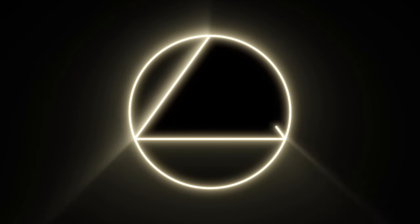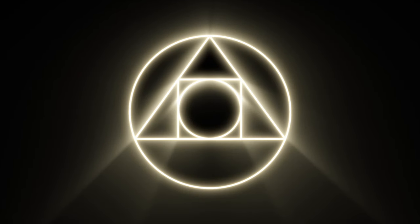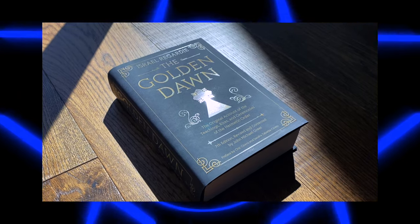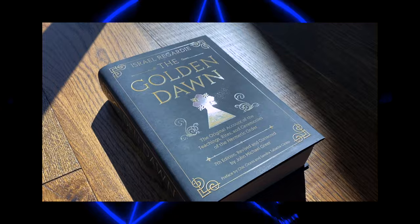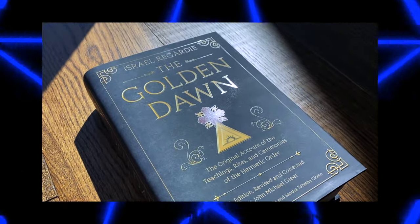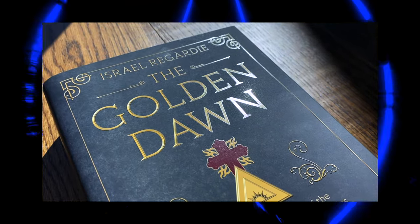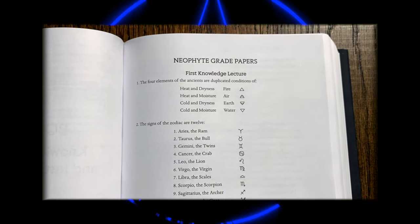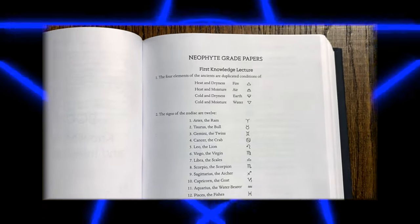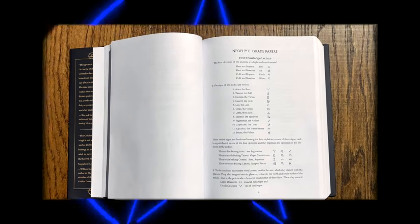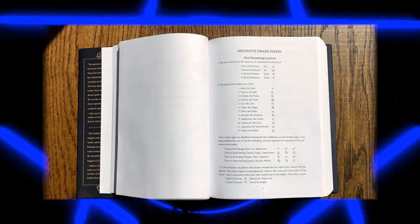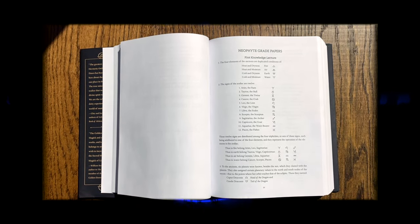Today on Mage Space, we are diving into the Golden Dawn's neophyte grade papers and reading the first knowledge lecture. The first knowledge lecture can be found in Israel Regardie's The Golden Dawn, page 51. If you like this video, please tap like, and if you would like to see more Mage Space content, remember to subscribe.